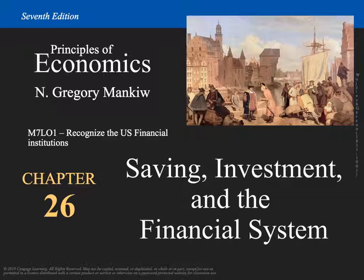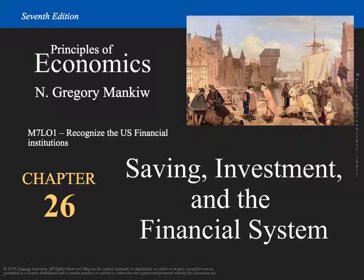Hi, and welcome back. Today we're going to take a look at Chapter 26, which is Saving Investment in the Financial System. Our first learning objective is to describe the main types of financial institutions in the U.S. economy, and to discuss their functions. The book doesn't do a great job covering U.S. financial institutions, so I did provide a link to briefly discuss the difference between the primary and secondary markets in this module.